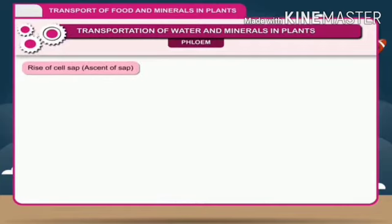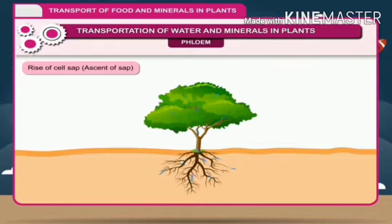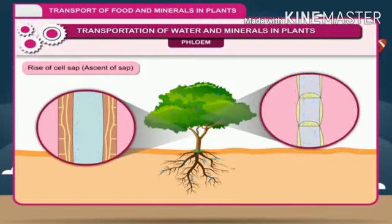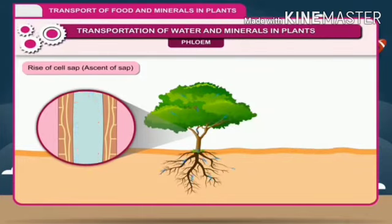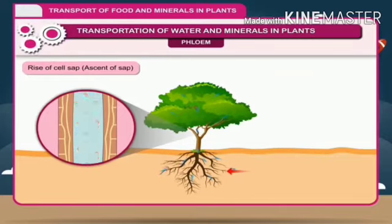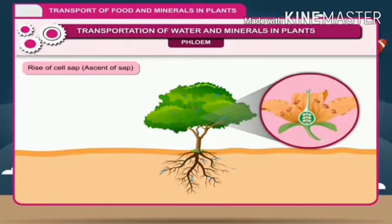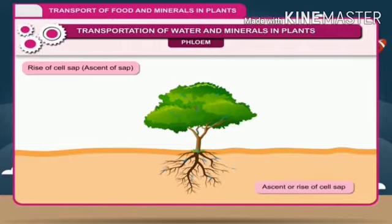Rise of cell sap and ascent of sap: In plants, it is an important feature to carry out vital activities, which occur through xylem and phloem. Water is absorbed through the roots and conducted to other parts of the plant where it is used for various purposes. The minerals in the form of water solution are also absorbed by the xylem from the soil. Thus, xylem acts as a pipeline for conducting water. The water and mineral solution absorbed by the roots and conducted upward to the stems, leaves, flowers, and other parts of the plant is called the ascent or rise of cell sap.